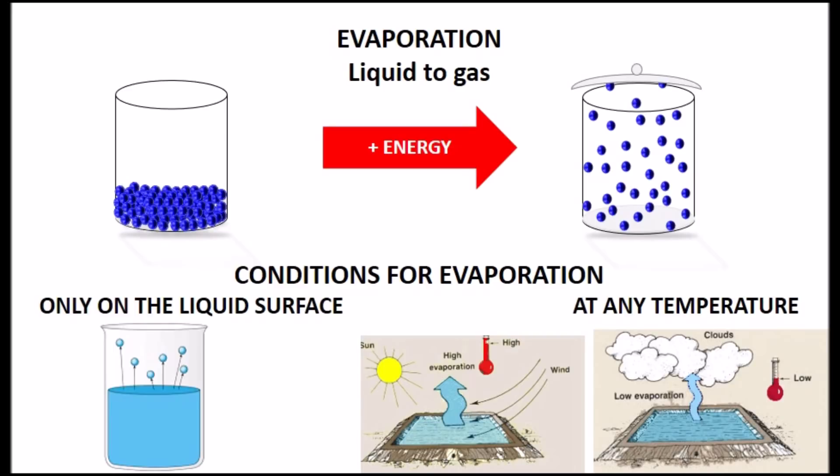Evaporation occurs only on the liquid surface. If we leave an open container with water, we will see that after some time, the water disappears. This change occurs because the particles of the surface absorb the energy of the air above, and use that energy to escape from the liquid. Evaporation occurs at any temperature, but the hotter the environment, the more evaporation will be produced. That's why liquids evaporate faster in the summer than in winter. Please be advised that evaporation occurs at any temperature.